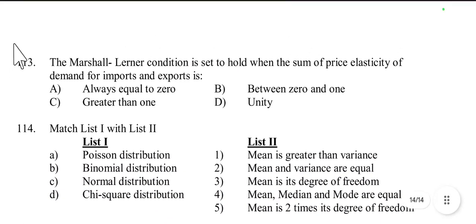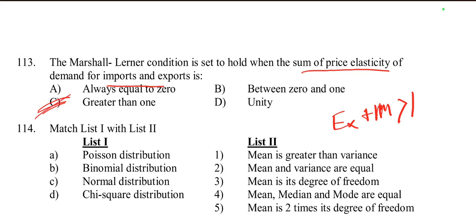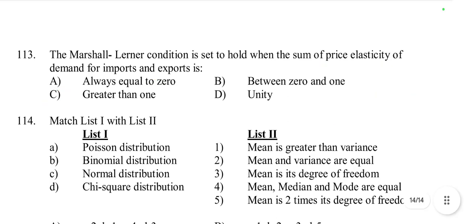Question number 113: The Marshall-Lerner condition is said to hold when the sum of the price elasticity of demand for imports and exports is greater than 1. Option C is correct. The Marshall-Lerner condition states that a depreciation or devaluation of a currency will improve the trade balance if the sum of the absolute values of price elasticity of demand for imports and exports exceeds 1, meaning the combined responsiveness must be sufficiently elastic.